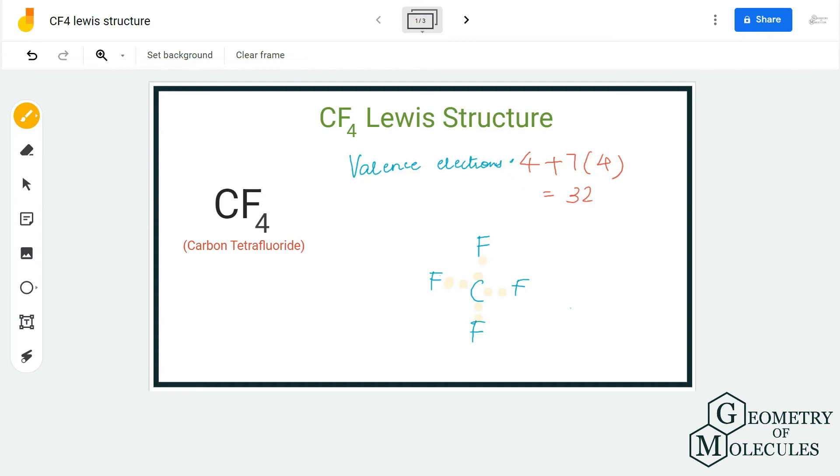We are going to place electrons around fluorine atoms first. As you can see, each fluorine atom has two valence electrons after sharing one of the electrons with carbon.